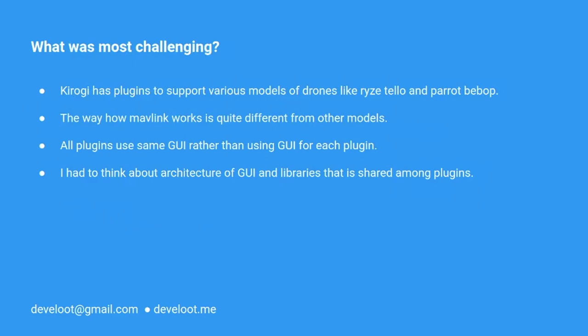The most challenging thing for me was thinking about the overall architecture. GiraGi has plugins to support various models of drones — it supports drones like DJI Tello and Parrot, and the way MAVLink works is quite different from others. Since all plugins use the same GiraGi core rather than separate instances, I had to think carefully about the architecture of GiraGi and the libraries shared among plugins.